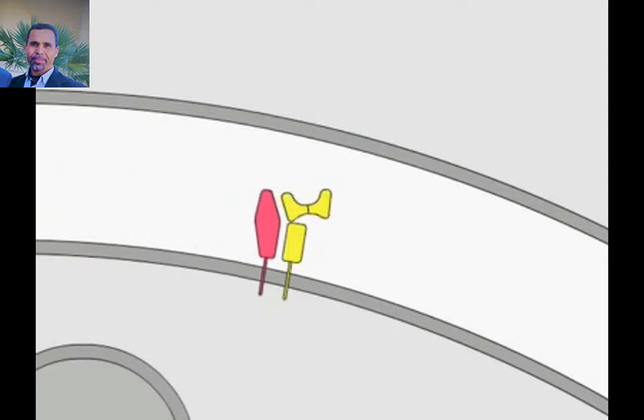The partially folded chain is transferred to a second chaperone, calreticulin, which aids the further folding of the chain and the association of beta-2 microglobulin.